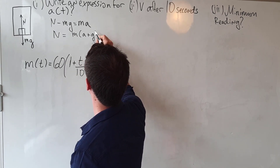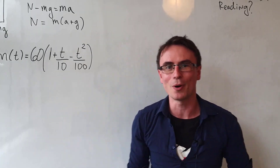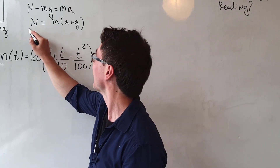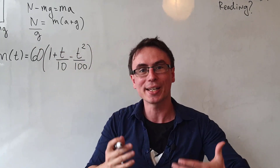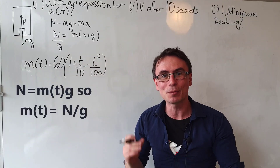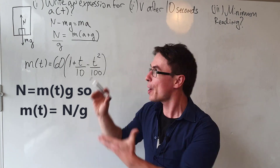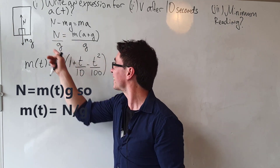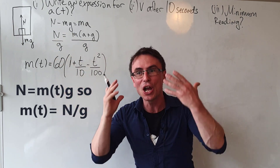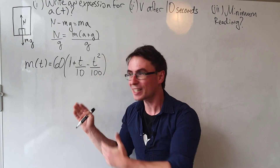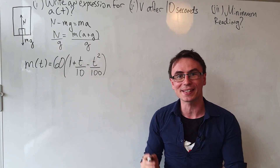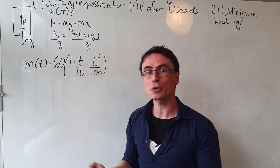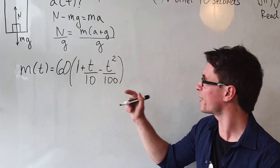Here is a tricky point: the perceived weight will be equal to the normal reaction divided by g, because N equals mass times g. So we also need to divide the right-hand side by g, and suddenly we have an expression for the measured mass. This expression actually gives us the measured mass, so we can set those two equal to one another.